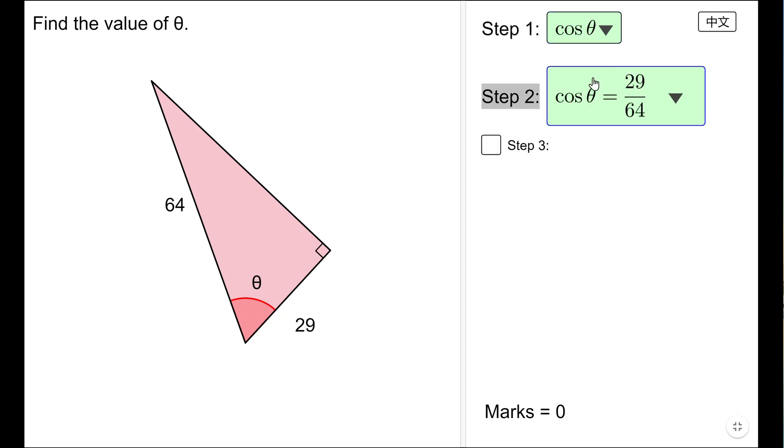Cosine is the adjacent over the hypotenuse. We'll be looking for 29 over 64. We will then be putting an inverse ratio of cos. θ is equal to inverse cos like this, and using our calculator to evaluate that we'll get 63.06. We'll check that we got it right.